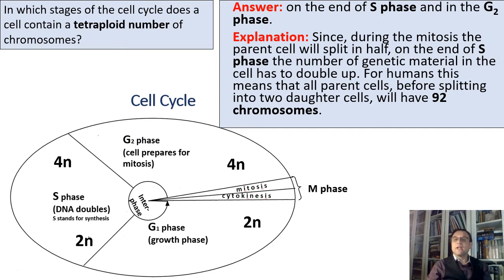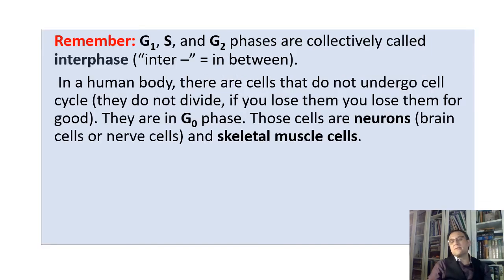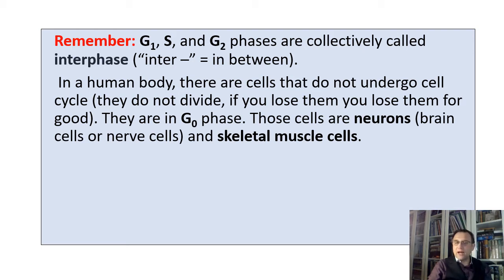Here is an explanation: since during mitosis the parent cell will split in half, by the end of S phase the amount of genetic material in the cell must double up. For humans, this means all parent cells, before splitting into two daughter cells, will have 92 chromosomes. G1, S, and G2 phases are collectively called interphase. In a human body, there are cells that do not undergo the cell cycle and do not divide — if you lose them, you lose them for good. They are in G0 phase. These cells are neurons and skeletal muscle cells — we also call them terminally differentiated cells.